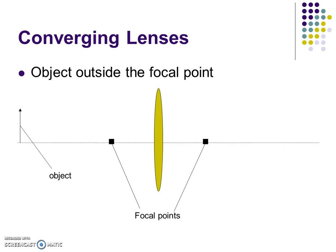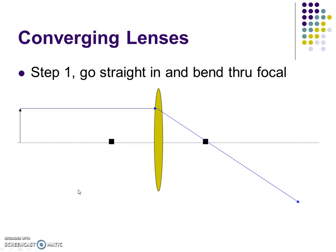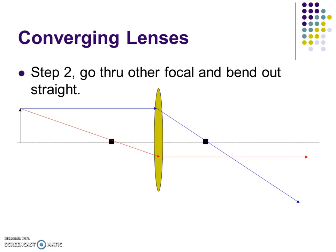Let's set up our first ray diagram. We have the converging lens, two focal points — make them equidistant — and let's put the object way out here. Just like what we did with the mirrors, we follow those same basic steps. The only difference is it's not going to bounce, it's going to bend. Step one: go straight in and bend through the focal point. Step two: go through the other focal point, and then when it hits the lens, it comes out straight. The rays don't bend until they hit the lens, because that's when they reach a new material.